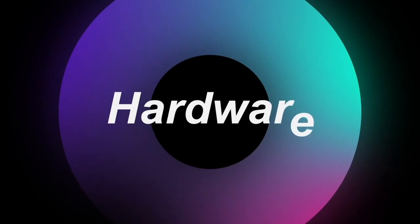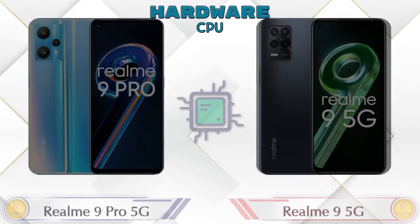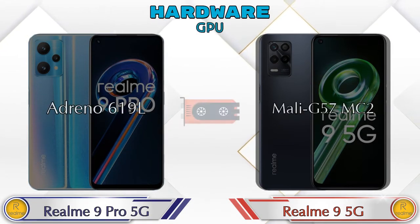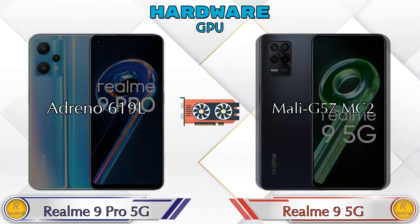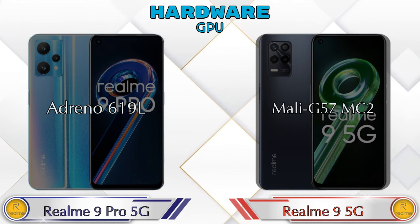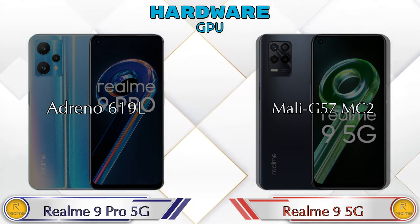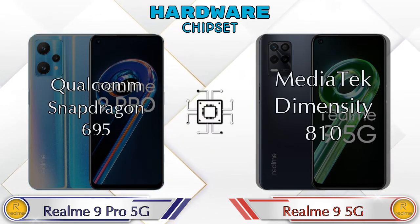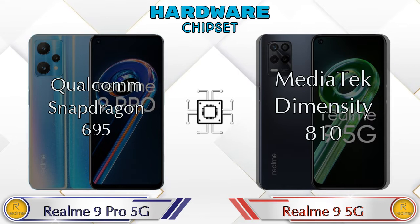First, let's talk about the most important part of the phone — hardware. Starting with the CPU and GPU: the Realme 9 Pro 5G has an Adreno 619L GPU, while the Realme 9 5G has a Mali-G57 GPU. For the chipset, the Realme 9 Pro 5G has a Qualcomm Snapdragon 695, and the Realme 9 5G has a MediaTek Dimensity 810.